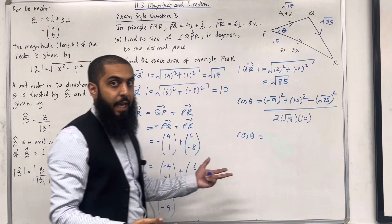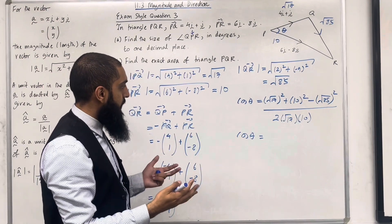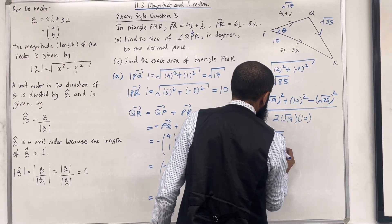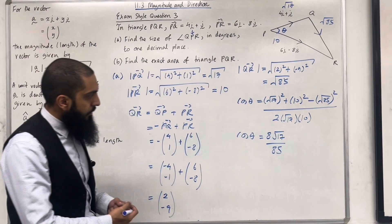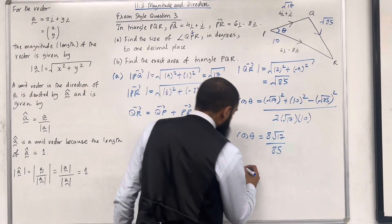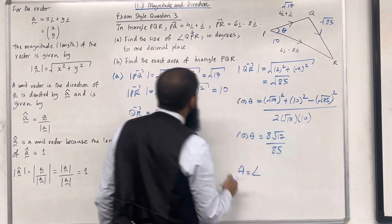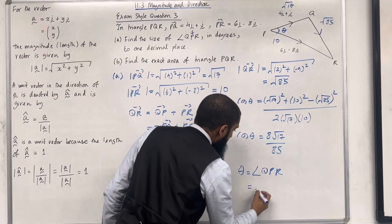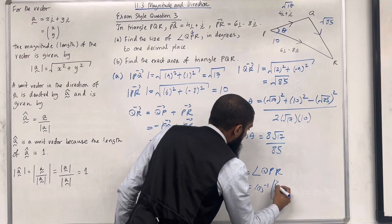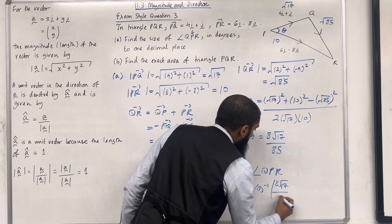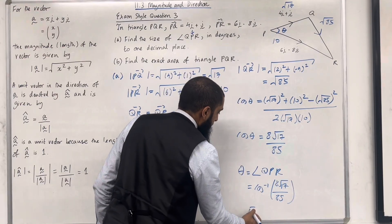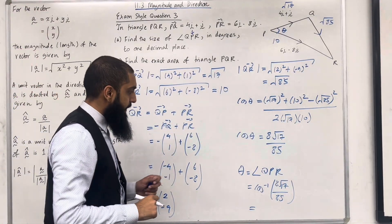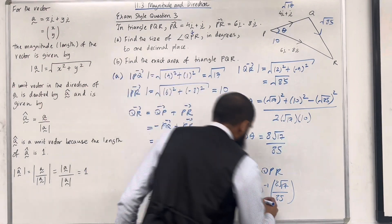Putting this into the calculator: the exact value of cos θ is 8√17/85. So angle QPR = cos⁻¹(8√17/85). Rounding to one decimal place gives 67.2°.